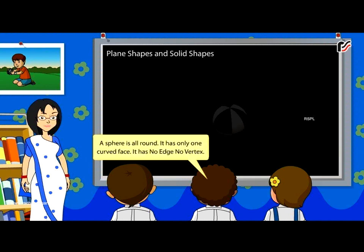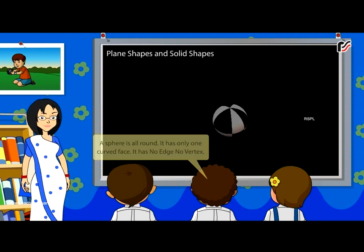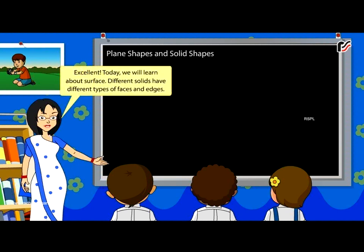A sphere is all round. It has only one curved face. It has no edge and no vertex. Today, we will learn about surface.